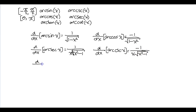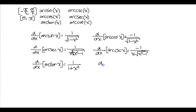And the derivative of arc tangent of x equals 1 over 1 plus x squared. And the derivative of arc cotangent of x equals negative 1 over 1 plus x squared.